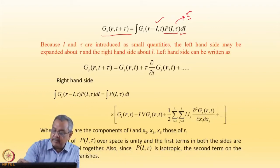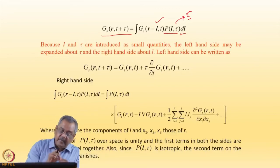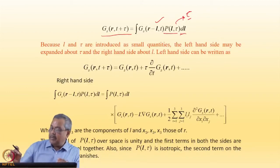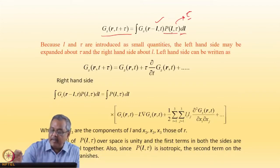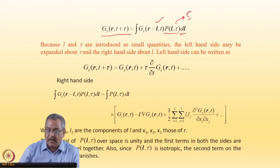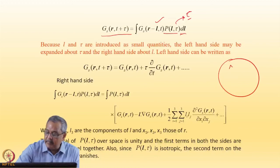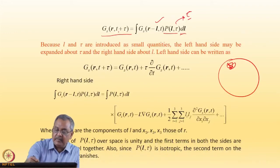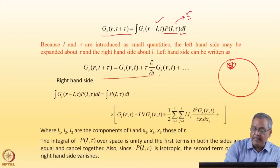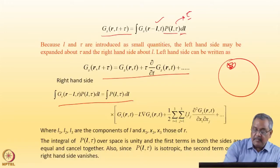P(l, τ) is the jump length distribution for a residence time τ — it sits here, after some time it jumps, after some time it again jumps. So there is a residence time and a jump length. The jump length probability is given by l, also dependent on time τ. When these are small quantities — because I am talking about a medium in which a particle is diffusing through short jumps and in short time scales — I can do a Taylor expansion in time and in space.